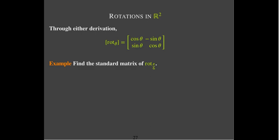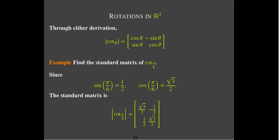Let's just do a little example. We'd like to find the standard matrix of a rotation through an angle of pi over 6 radians. We just need to know sine of pi over 6 and cosine of pi over 6, then substitute them into our formula.